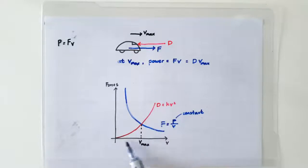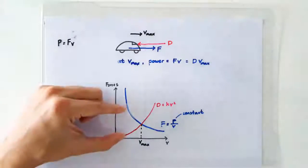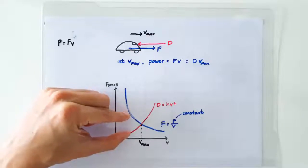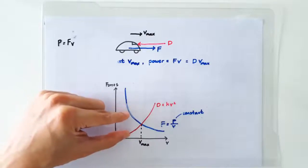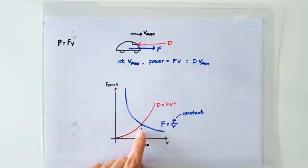At speeds slower than the maximum speed, the difference between the two curves represents the net force. So you see the net force becoming smaller and smaller, meaning the car will accelerate at a lower and lower rate, until it hits the maximum speed, where it cannot accelerate anymore.